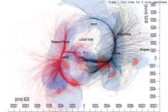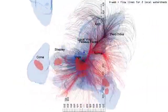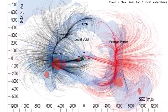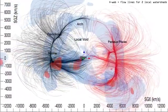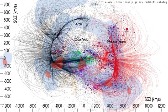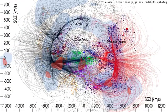The redshift catalog is superimposed with colors associating them with separate major features.